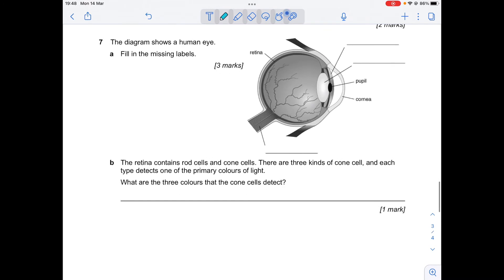Question seven. The diagram shows the human eye. Fill in the missing labels. So we have got an iris. We've got the lens.